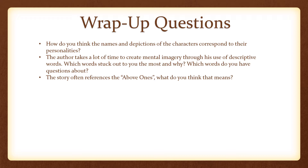As we come to the end of our digital storytelling exercise, there are a few questions important to understanding the book in a deeper manner. How do you think the names and depictions of the characters correspond to their personalities? The author takes a lot of time to create mental imagery through his use of descriptive words — which words stuck out to you the most, and why? Which words do you have questions about? The story often references the above ones — what do you think that means?